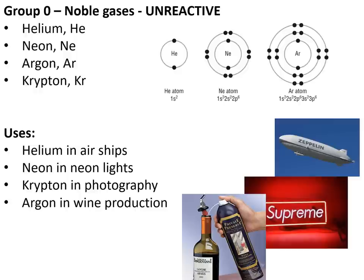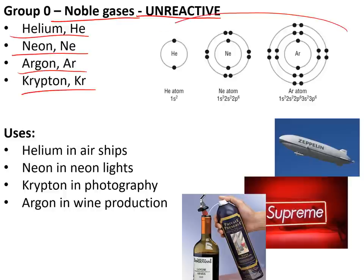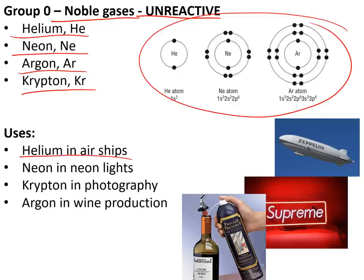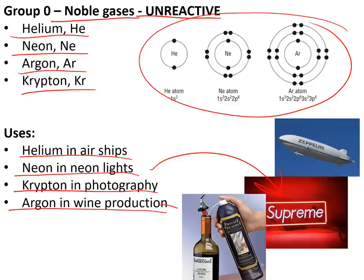The noble gases are group 0 — these are unreactive (inert) gases: helium (He), neon (Ne), argon (Ar), and krypton (Kr). They are all inert because they have full outer shells, so they have no need to react. Helium is used in airships because it is less dense than air and doesn't explode. Neon is used in neon lights because it glows red when electricity passes through it. Krypton makes a bright white flash for photography, and argon is used to replace air in wine bottles to prevent oxidation.